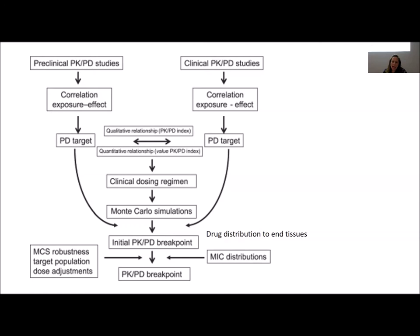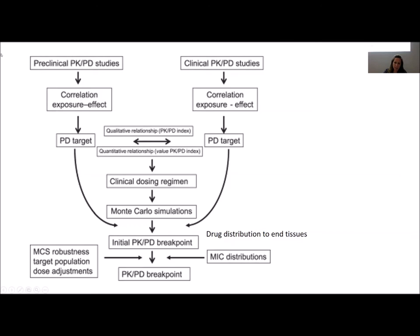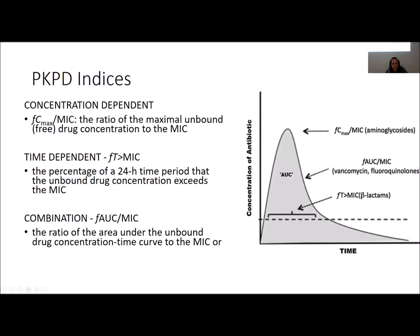That information is taken and many microbiological concepts are worked through, ultimately giving us what's most relevant for pathology reports — clinical susceptibility breakpoints. The pharmacodynamic target is the minimum value we aim for, depending on what we're trying to achieve. And these days we're trying to achieve a lot. Some studies just want to suppress growth of the organism, while others want to decrease growth.